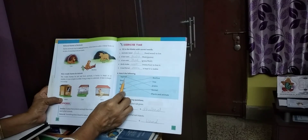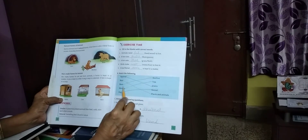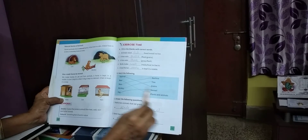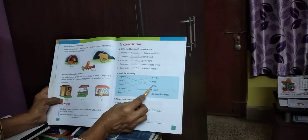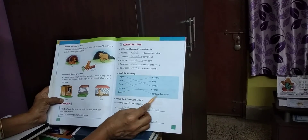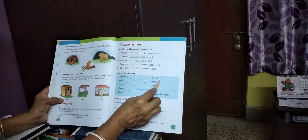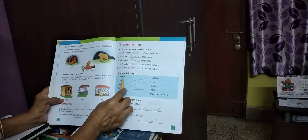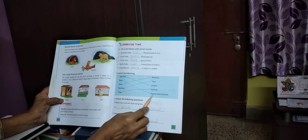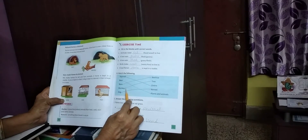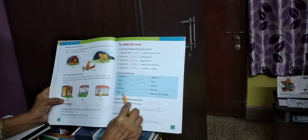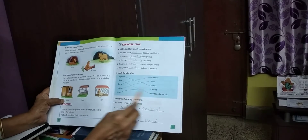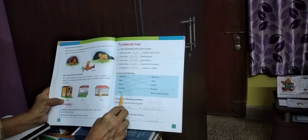Match the following. Left side: squirrel, bear, bees, monkey, dog. Right side: beehive, tree, grains, kennel, plants and animals. Squirrel matches with grains. Bear matches with plants and animals. Bees match with the beehive. Monkey matches with the tree. Dog matches with the kennel.